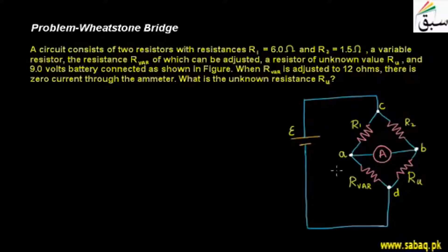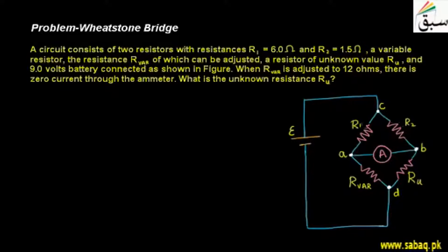We discussed this in the Wheatstone Bridge — when we have zero deflection, it means that in the Wheatstone Bridge the resistances R1 and R2, their ratio will equal the ratio of R-variable and R-U. This is the balance condition of the Wheatstone Bridge.